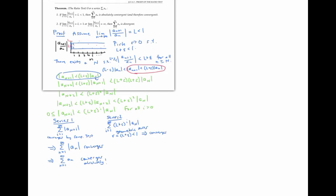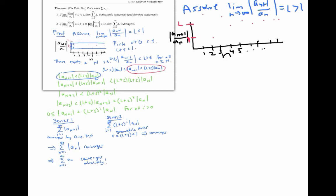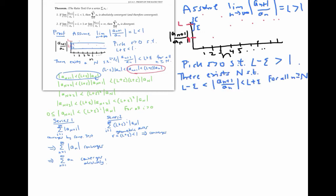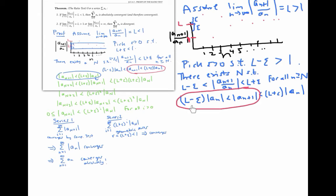Now let's prove the second part, and let's start by assuming that the limit is greater than one. Since L is bigger than one, we can pick a tiny number epsilon so that when we go down from L by epsilon, we don't go as far as the number one. So we pick epsilon greater than zero such that L minus epsilon is still greater than one. As before, we can use the definition of limit and a little algebra to get the same inequality. This time I'm going to focus on the left side of the inequality. Since L minus epsilon is greater than one, this tells me in particular that the absolute value of a sub (n plus one) is always bigger than the absolute value of a sub n for little n greater than or equal to capital N.